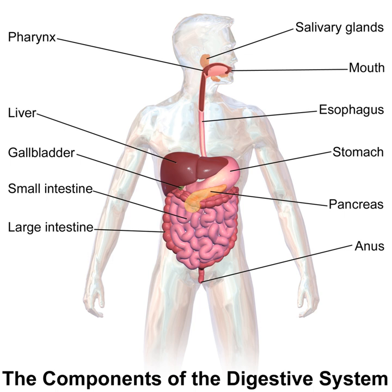Diseases affecting the large intestine may cause blood to be passed with stool, constipation, or may result in abdominal pain or a fever. Tests that specifically examine the function of the large intestine include barium swallows, abdominal X-rays, and colonoscopy.